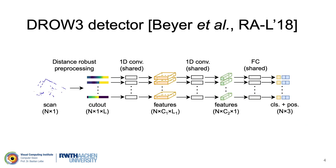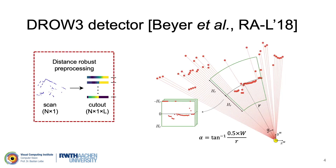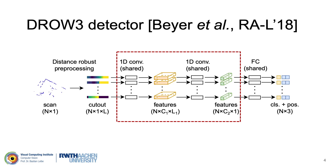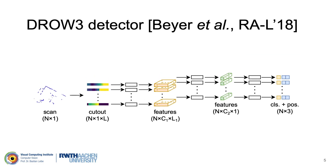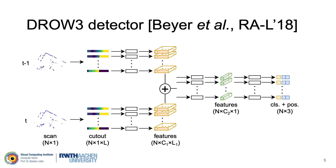Here is the architecture of the DROV3 detector. The input to the network is a scan expressed as N range measurements. For each scan point, DROV3 first computes an opening angle and uses linear interpolation to pull its neighboring points within the angle into a cutout with fixed length L. The angles are computed such that the cutouts correspond to a fixed-size opening in Euclidean space. All the cutouts are then forwarded through a neural network composed of 1D convolutions. The network classifies each cutout as a person or background and regresses the center location of the person. To alleviate the problem caused by sparse measurements, DROV3 fuses the past 5 scans to obtain a stronger signal.